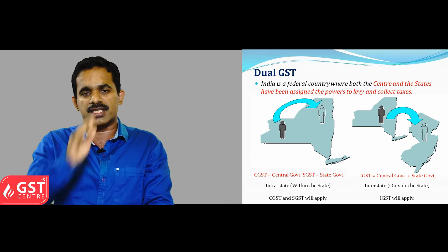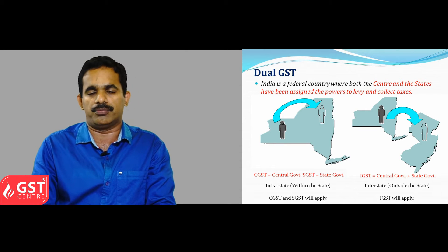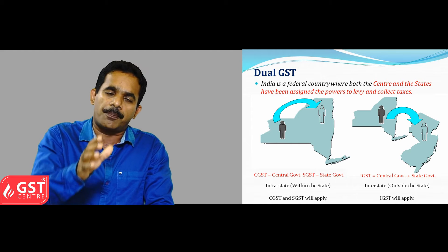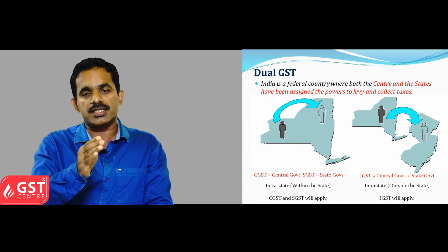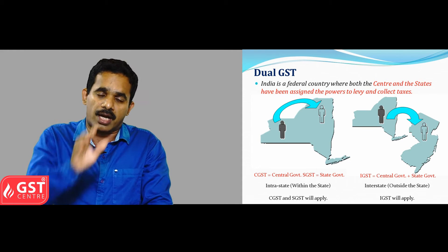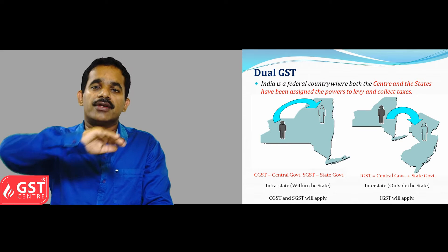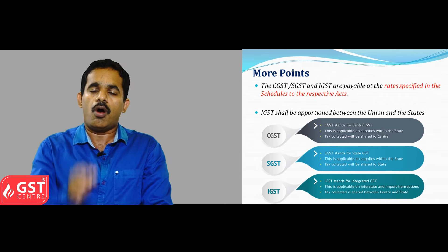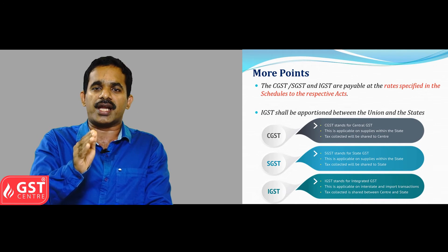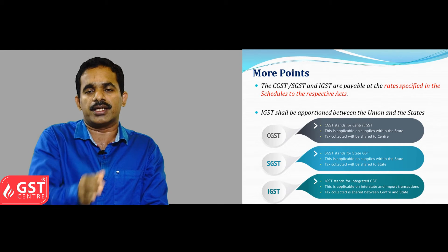The CGST portion of Goods and Services Tax will go to the central government, and SGST — that is, State Goods and Services Tax — will go to the state government. In the case of intra-state supply, both CGST and SGST will apply. In the case of inter-state supply of goods and services, a separate component — IGST, Integrated Goods and Services Tax — will be levied, going to the center, which can then distribute it among the states. All three components — CGST, SGST, and IGST — will be levied as per the rates specified in their respective schedules, and IGST collected will be distributed among the central and state governments as per the recommendation of the GST Council.